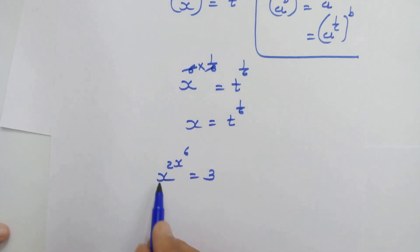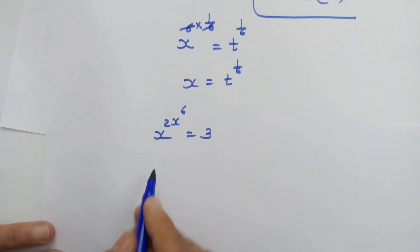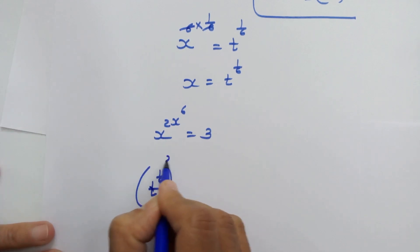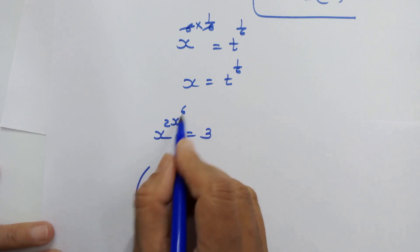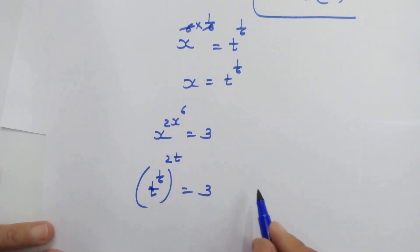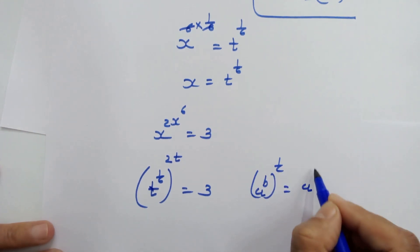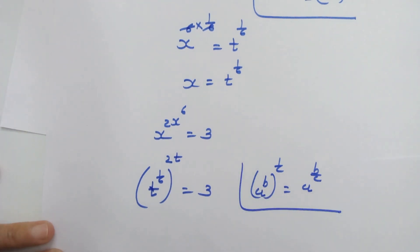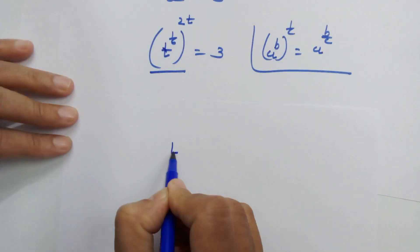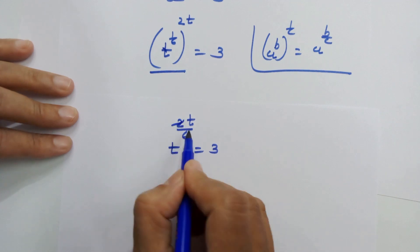Now let's go back to our main equation: x raised to 2x raised to 6 is equal to 3. We have x equal to t raised to 1 upon 6, and we have taken x raised to 6 equal to t. Using the exponent rule, we can write t raised to 2t upon 6 is equal to 3.